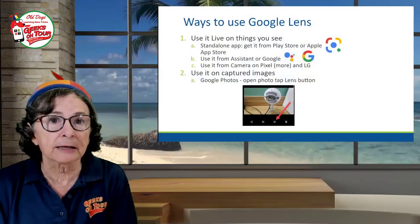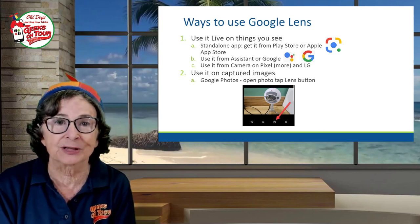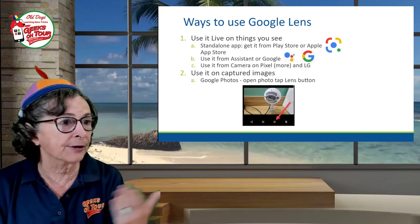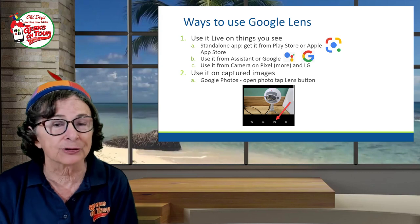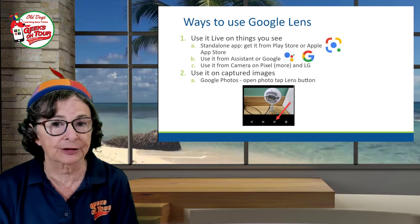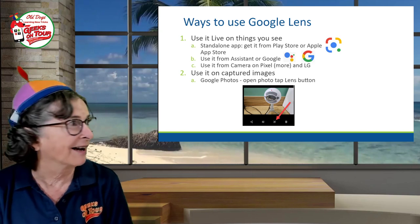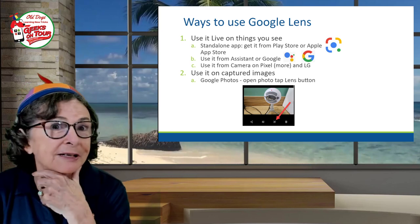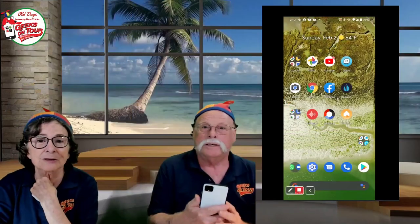The second way is on a captured image — you can do it live or on a photo you've taken. If you use Google Photos — and it has to be Google Photos — you tap the Lens button. It's also not on all phones; you have to have a pretty good, relatively new phone and a good internet connection. Jim's Pixel 4 XL is only about two weeks old, and it really is pretty amazing.